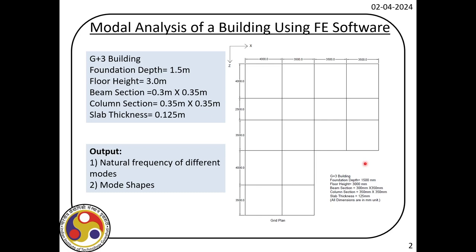We have an asymmetric plan building — a G plus 3 building where the depth of foundation is 1.5 meter. Floor height is 3 meter. We use uniform sections for beam and column. The beam section for the complete structure is 0.3 meter by 0.35 meter. The column section remains the same for all floor levels at 0.35 by 0.35, and the slab thickness is 125 millimeter. We used the default concrete property in ANSYS to perform the modal analysis and plotted the mode shapes.